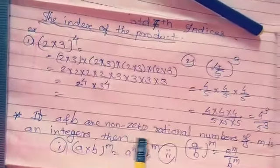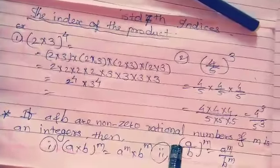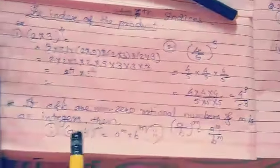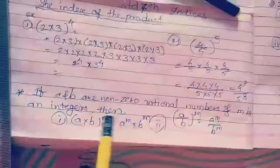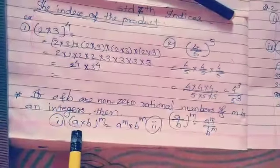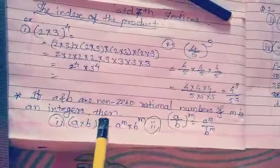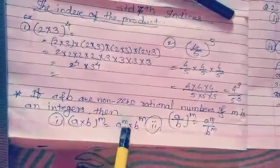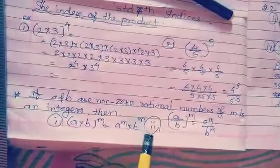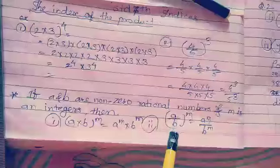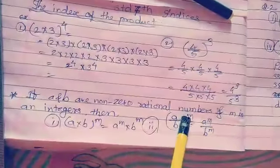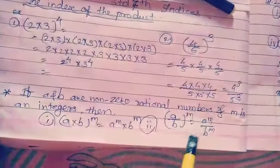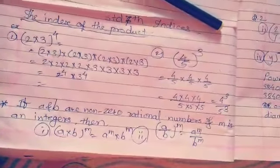If A and B are non-zero rational numbers and M is an integer, then: Number 1 — A into B raise to M is equal to A raise to M into B raise to M. Number 2 — A upon B raise to M is equal to A raise to M upon B raise to M.